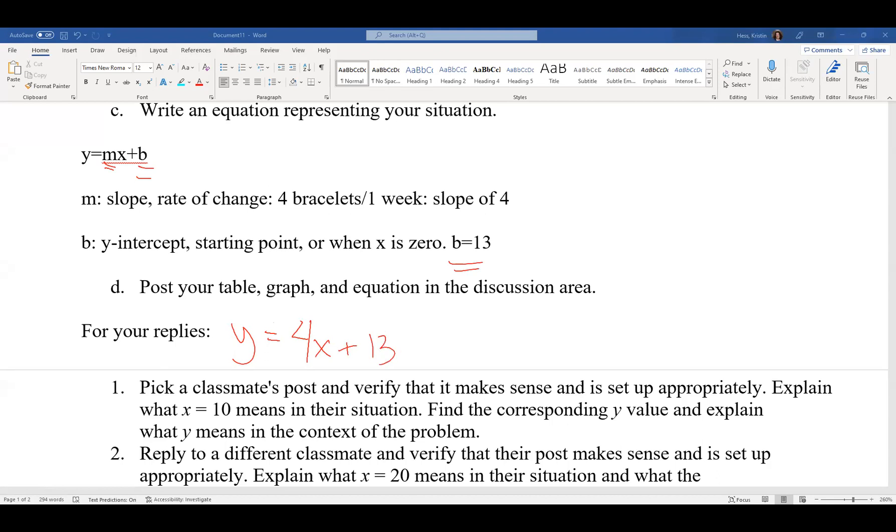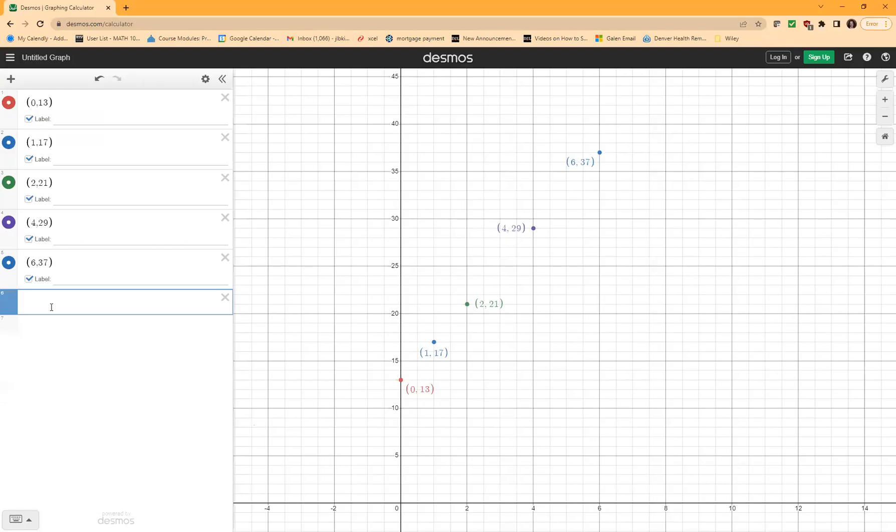So now we can go to Desmos and put that equation into our graph. And not only will we be graphing the equation, but it will help us know that we have the right points. So we have y equals 4x plus 13. And first of all, we can see that I typed 14 instead of 13, so we know that there's an error because none of the points fall on the line. But once I type in the right equation, we see all the points are on the line.